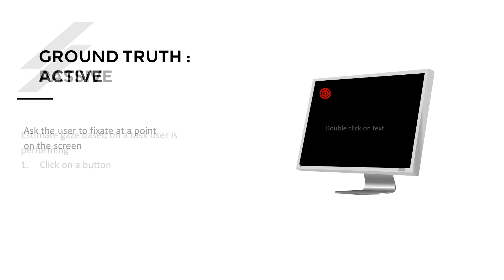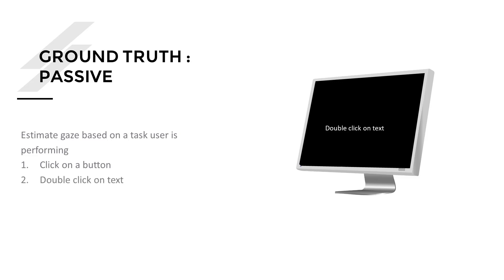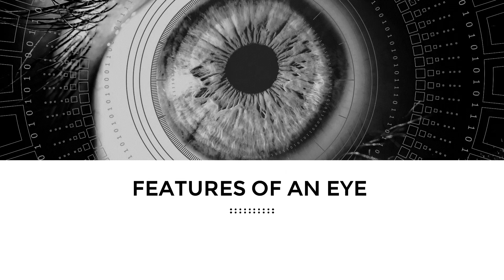The second method is passive. The user is asked to do regular computer usage. As they use their computer, certain actions require fixation on certain locations — for example, clicking a button means you're usually looking at it, and double-clicking on text means you're looking at that text. Using this passive information, you collect data as they go about their day-to-day work. That's another way of collecting ground truth data for gaze estimation.